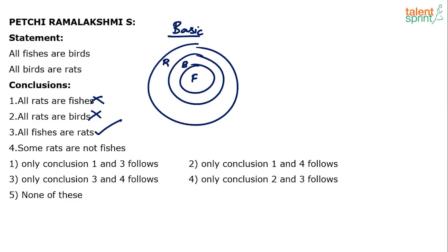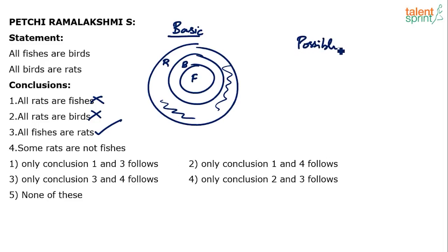Conclusion 4: some rats are not fishes. Well, if you look at the basic diagram, some rats are not fishes appears to be true, because these outside rats are not fishes. But is it definitely true? No. Because one possible way of drawing this diagram is as follows — we can just take one circle which has fishes, birds and rats. See, all fishes are birds. Here you find all the fishes are birds. Yes.